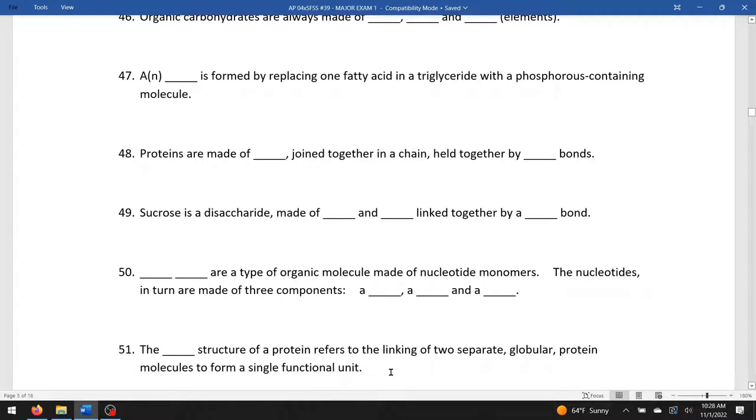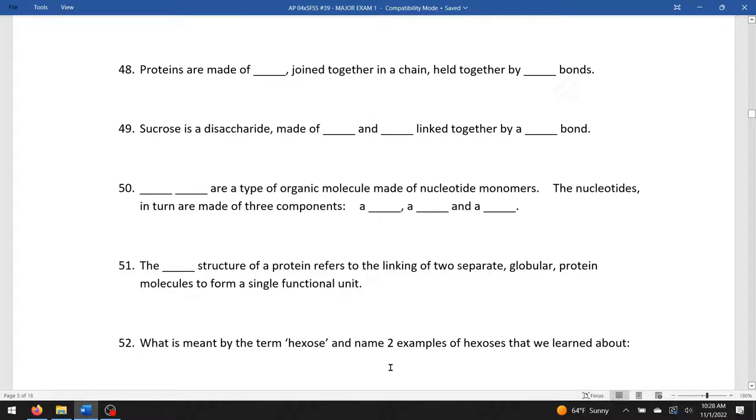The blank structure of a protein refers to the linking of two separate globular protein molecules. If you take two of them that are separately formed and glue them together to form a single unit, this is the fourth level of protein folding, or the quaternary structure. What is meant by the term hexose? Hexose is a six-carbon monosaccharide. Name two examples: glucose and fructose.